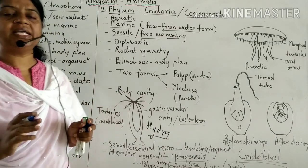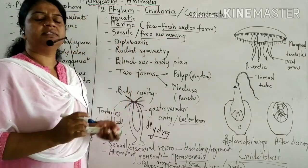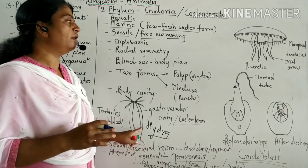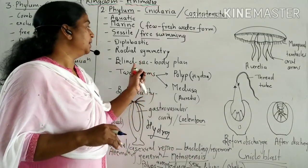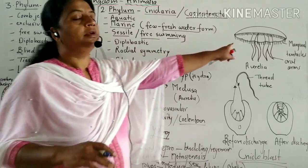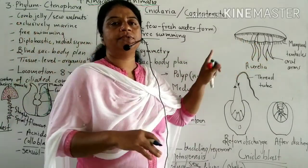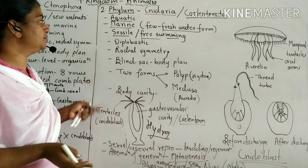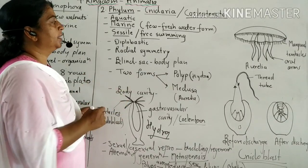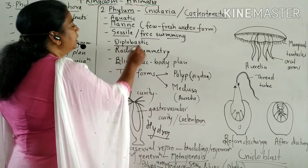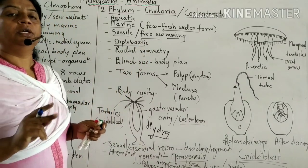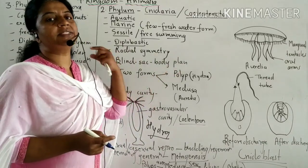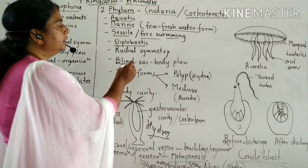They are sessile or free swimming. Sessile means attached to a substratum — they do not move from one place to another. Free swimming means they float on the surface of water, moving from one place to another. They are diploblastic, meaning the body originates from two germinal layers: ectoderm and endoderm.